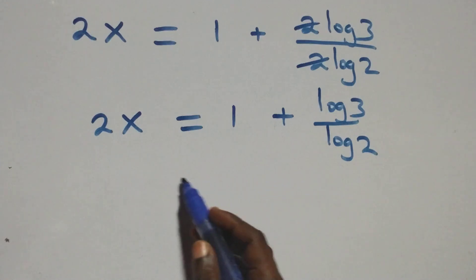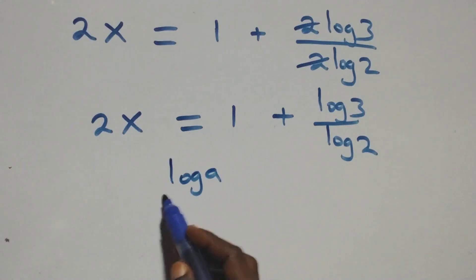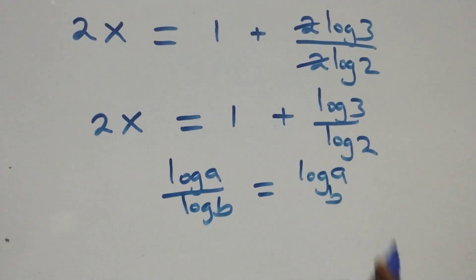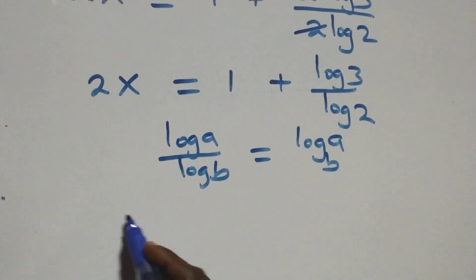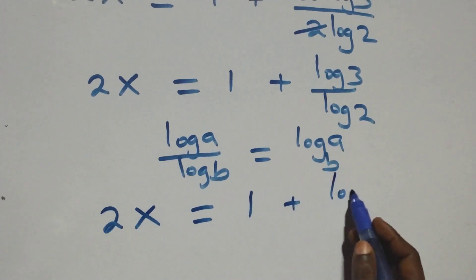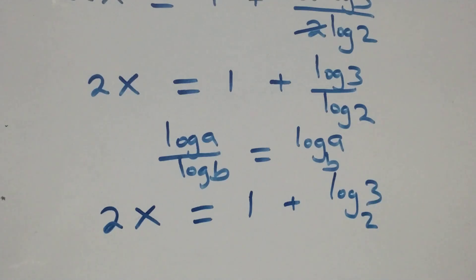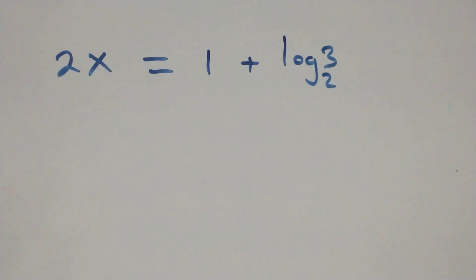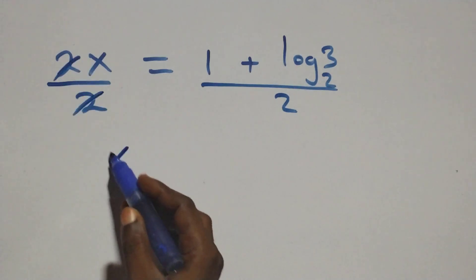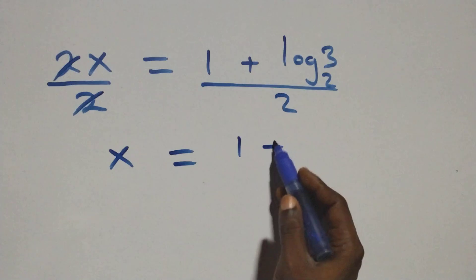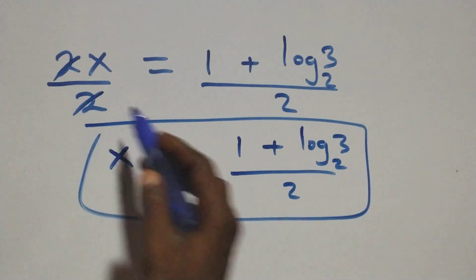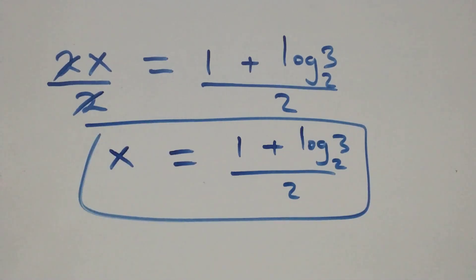Next step, we apply change of base. When we have log a over log b, this is the same thing as log a to base b. So all we have here becomes 2x equals to 1 plus log 3 base 2. Then we divide both sides by 2: the two cancels, and we have x equals to 1 plus log 3 base 2, all over 2. That is the value of x.